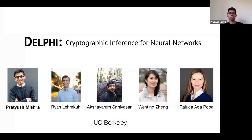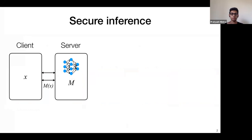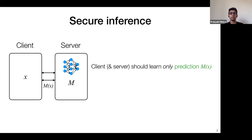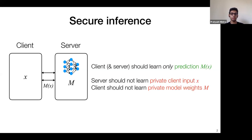I'll be presenting Delphi, which is a system for secure inference on neural networks. In the secure inference problem, a server has some machine learning model M and a client has some private input X. The client wants to obtain the prediction of M on X, but the server shouldn't learn any information about the client's input, and the client should not learn anything about the server's model M beyond what is revealed by the prediction.